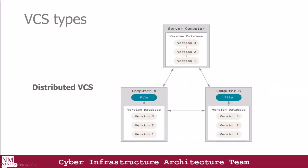Finally, we have the distributed version control system. This is what we currently use, and examples of this kind of system are Git, Bitbucket, and so on. This type of version control system mirrors the repository including its full history. So if any server dies and these systems were collaborating via that server, any of the client repositories can be copied back up to the server to restore it. Every clone is really a full backup of all the data.